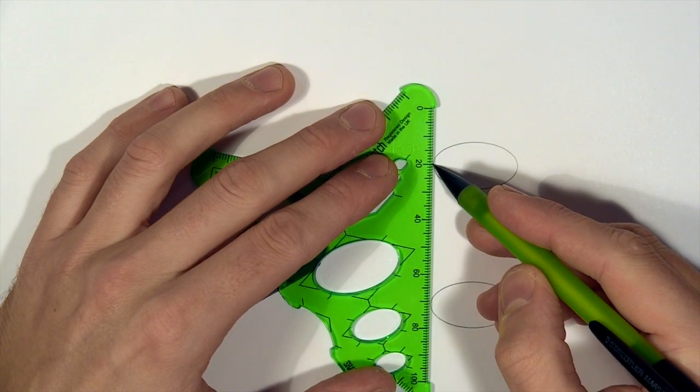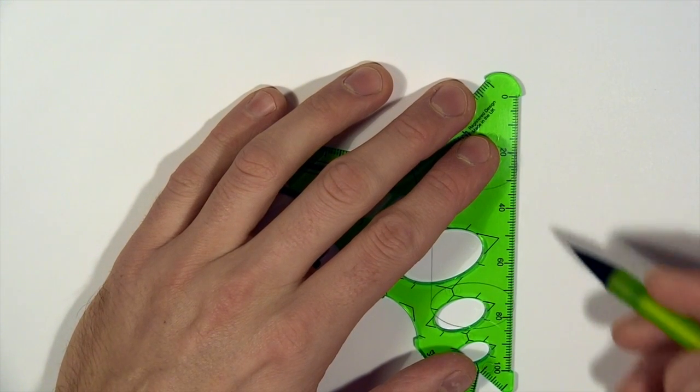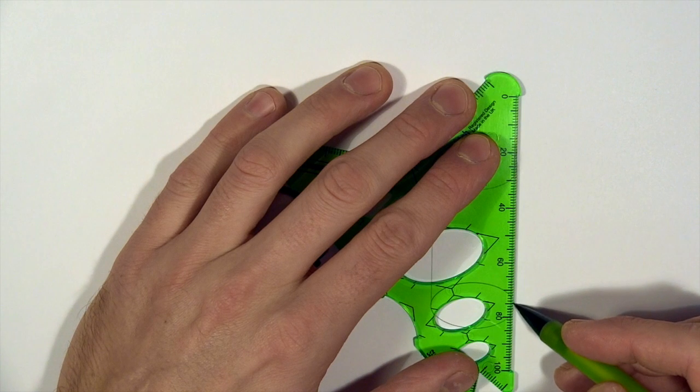You could of course do this without even doing that and just guess it again, but at least doing it this way makes sure that you've got your ellipses lined up, ready to just be joined up with the ruler.